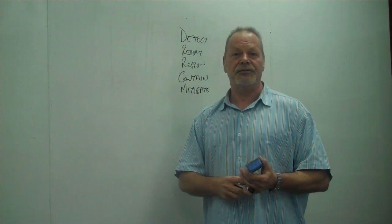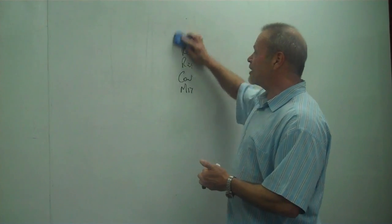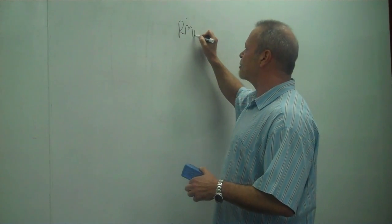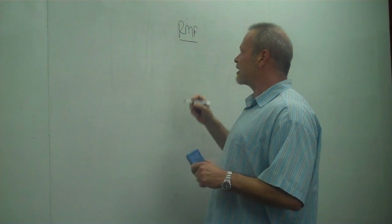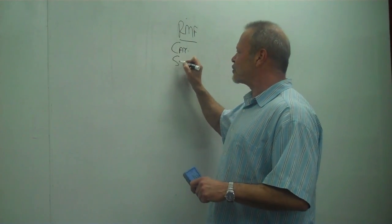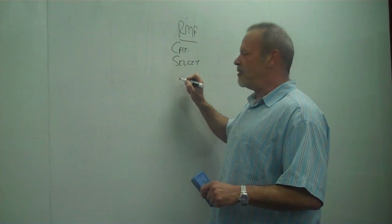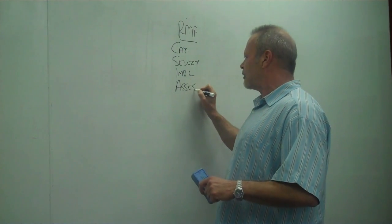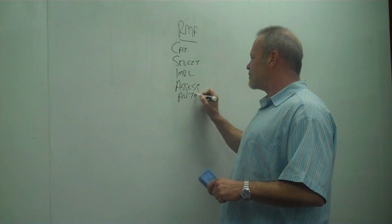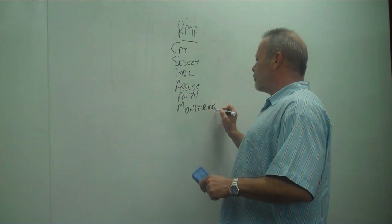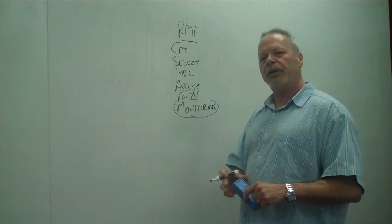So NIST, the National Institute of Standards and Technologies, has recast its three-year certification and accreditation cycle into a continuous six-step risk management framework. These six steps include the categorization of assets, the selection of controls, the implementation of those controls, the assessment of those controls, the authorization of systems, and the monitoring of those controls. And it's this sixth step that we're here to discuss.